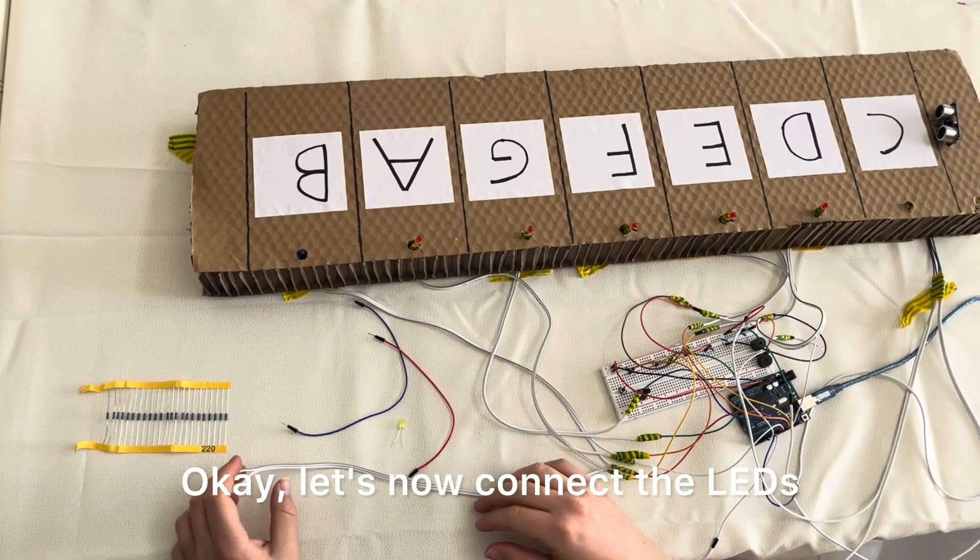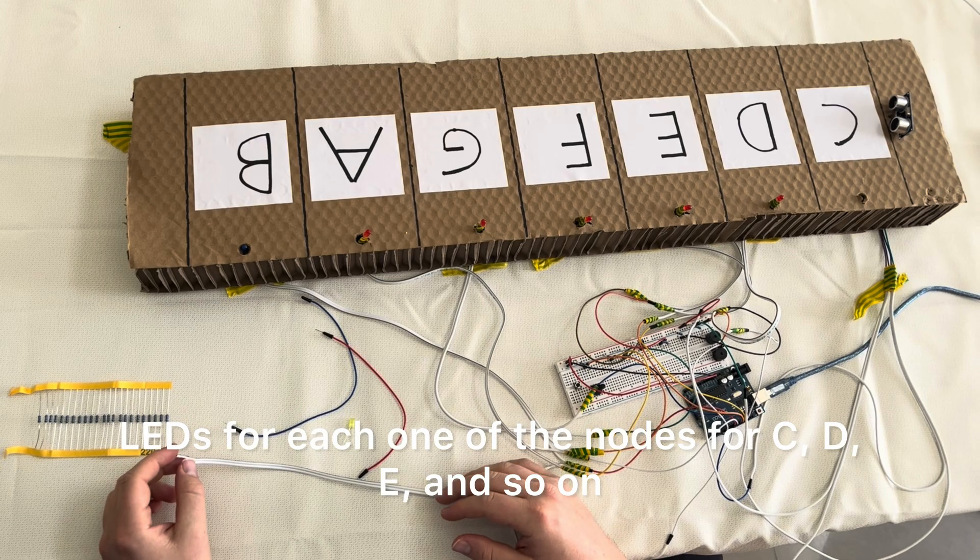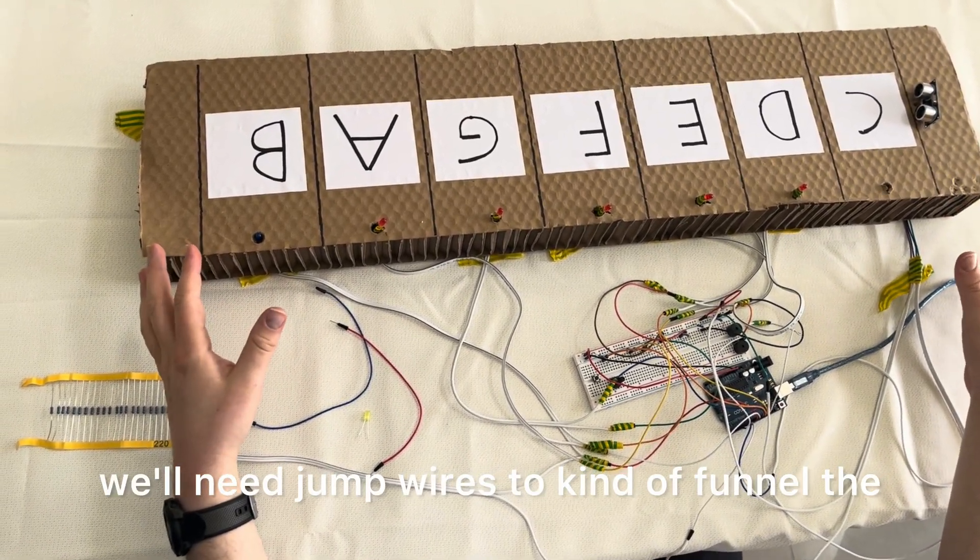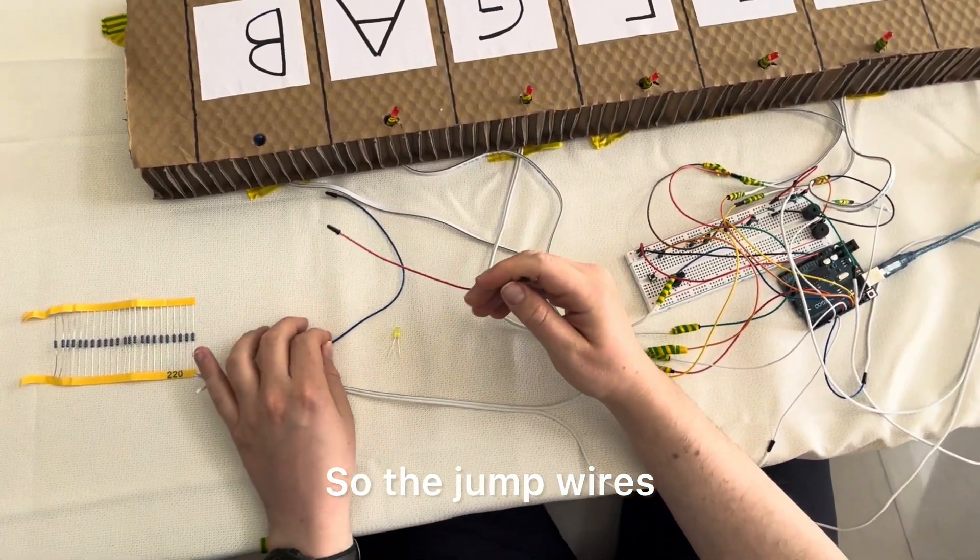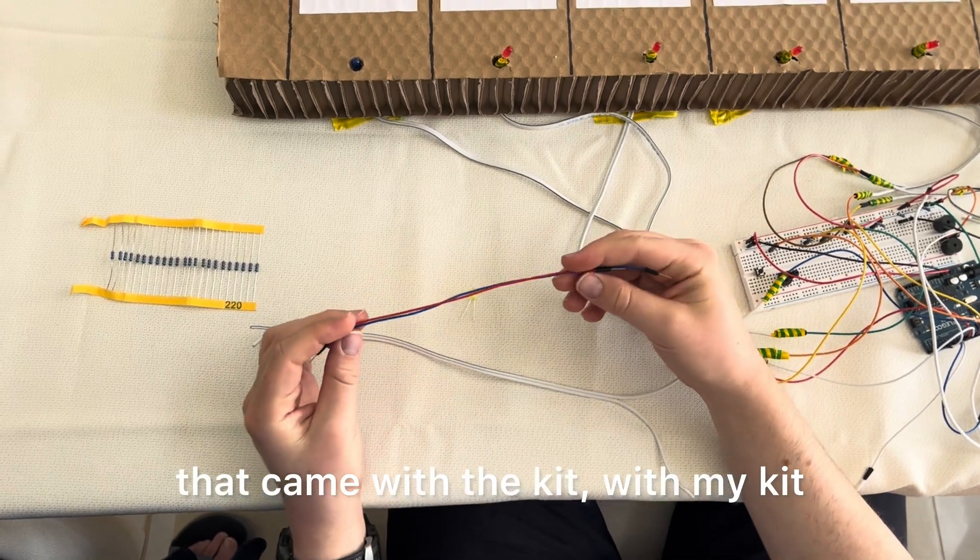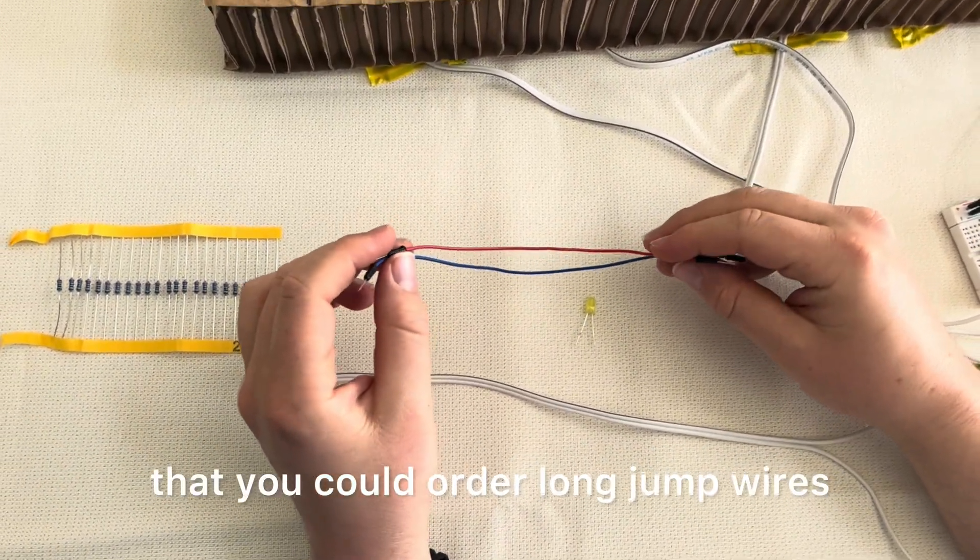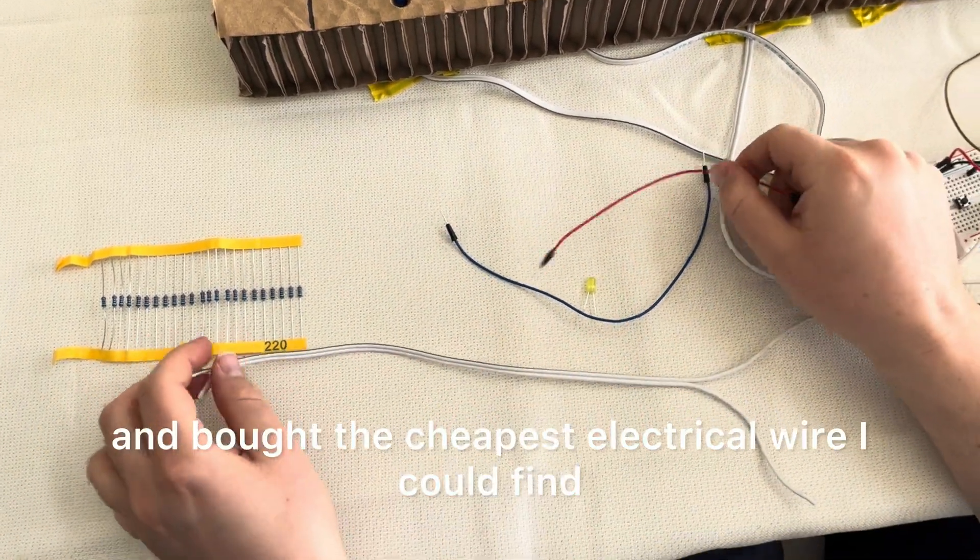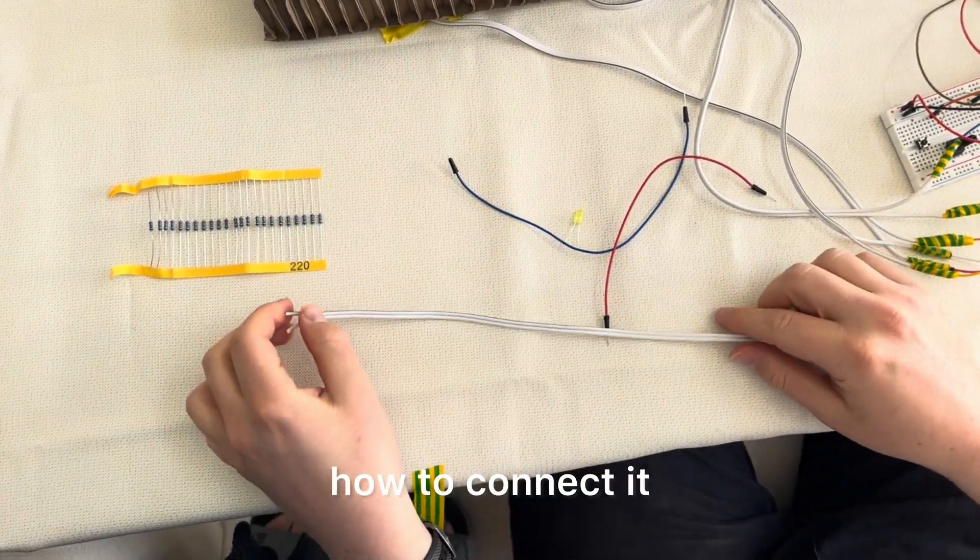Let's now connect the LEDs. We'll need to connect seven different LEDs for each one of the notes, for C, D, E and so on. Now because it's a big piano, we'll need jump wires to funnel the LEDs to the board. The jump wires that came with my kit are just way too small. I saw online that you could order long jump wires, but I did not have that, so I just went to the hardware store and bought the cheapest electrical wire I could find.